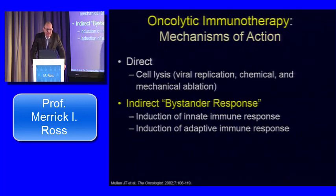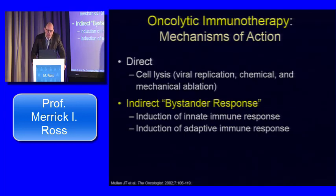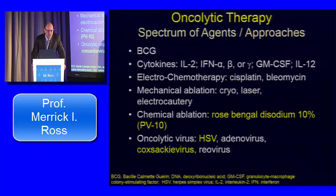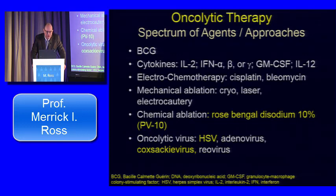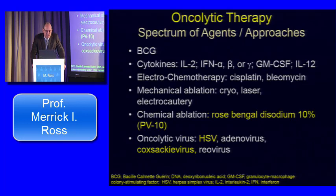There are a couple mechanisms of action: direct cell lysis through viral replication or ablation using chemical or mechanical methods like electroporation, and an indirect bystander response through induction of the innate immune response as well as the adaptive specific immune response. A variety of agents have been studied: BCG long ago, cytokines, electrochemotherapy using electroporation with bleomycin or cisplatinum, mechanical ablation using cryo or laser or electrocautery, chemical ablation particularly with rose bengal called PV10, and oncolytic viruses — specifically herpes simplex virus and Coxsackie virus.